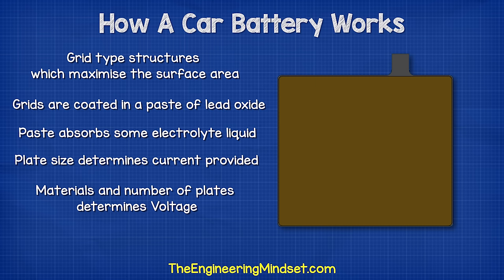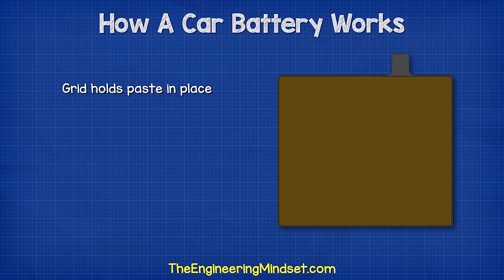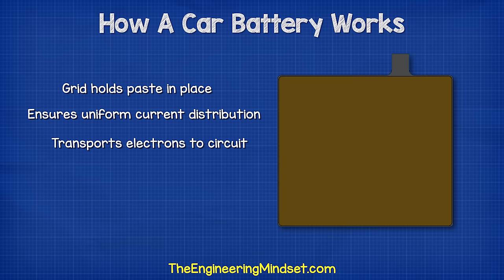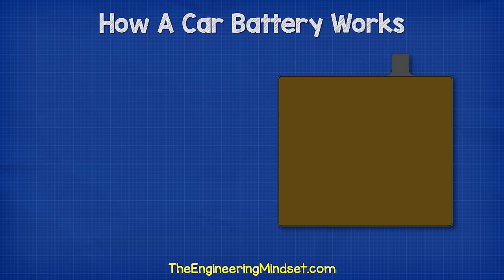The grid holds the paste in place to ensure a uniform current distribution across the plate and helps to transport the electrons out of the battery and around the car's electrical circuit. The negative plate is the anode — this is a plate of pure lead.